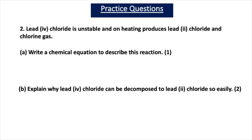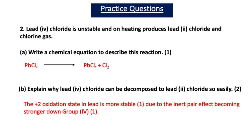Here's the second practice question. Question 2 states that lead 4 chloride is unstable and on heating produces lead 2 chloride and chlorine gas. Part A asks you to write a chemical equation for this reaction: PbCl4 → PbCl2 + Cl2. One mark if you had that correct. For part B, explaining why lead 4 chloride can be decomposed to lead 2 chloride so easily: the plus 2 oxidation state in lead is more stable — one mark — due to the inert pair effect becoming stronger down group 4 — one mark for mentioning the inert pair effect becoming stronger.